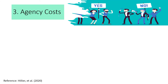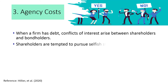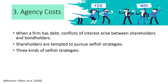When a firm has debt, conflicts of interest arise between shareholders and bondholders. These conflicts can be magnified when financial distress occurs, imposing agency costs on the firm. Because of this, shareholders are tempted to pursue selfish strategies. These selfish strategies are costly because they lower the market value of the entire firm. There are three kinds of selfish strategies, which we will learn in the next few slides.